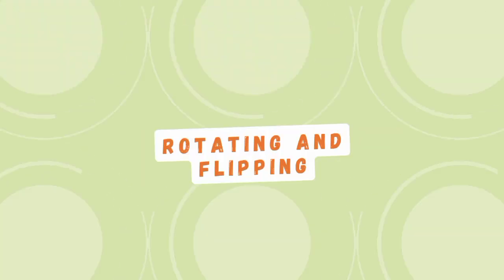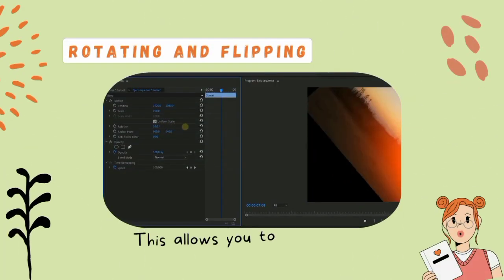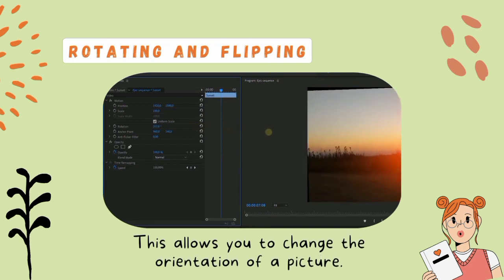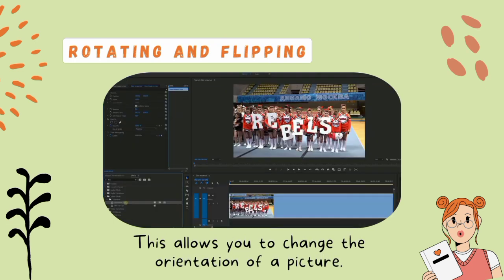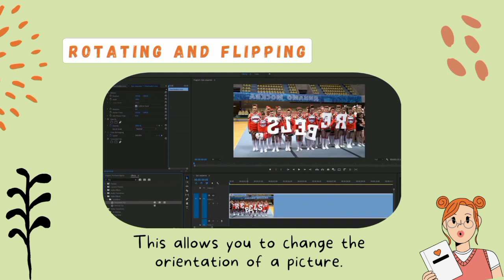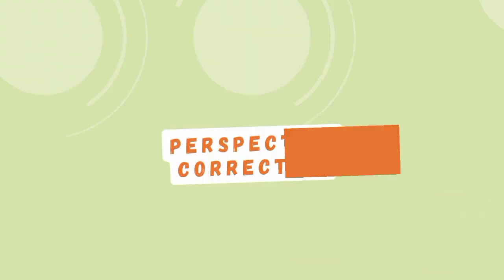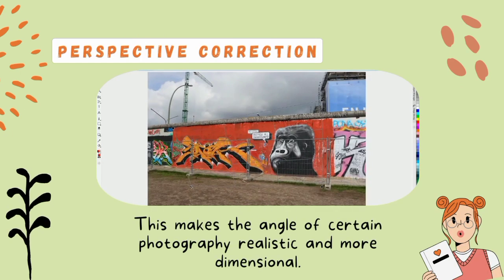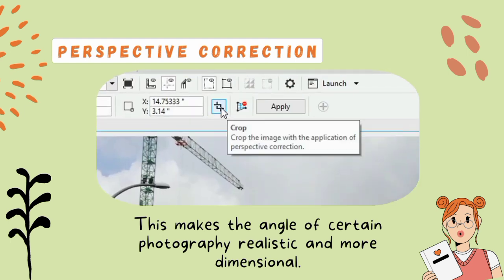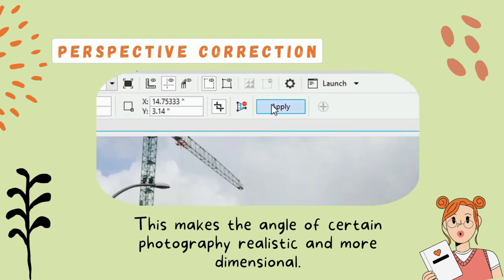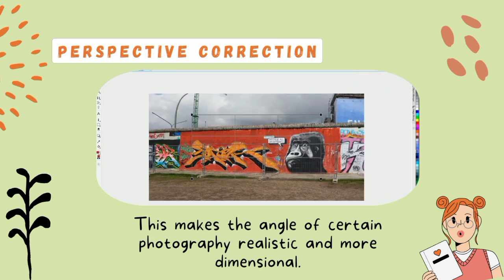Rotating and flipping — this technique allows you to change the orientation of a picture. You can rotate your image by any degree or flip it vertically and horizontally. Perspective correction makes the angle of a certain photograph realistic and more dimensional, thus enhancing the overall appearance of a picture. This is commonly used by professional photographers.